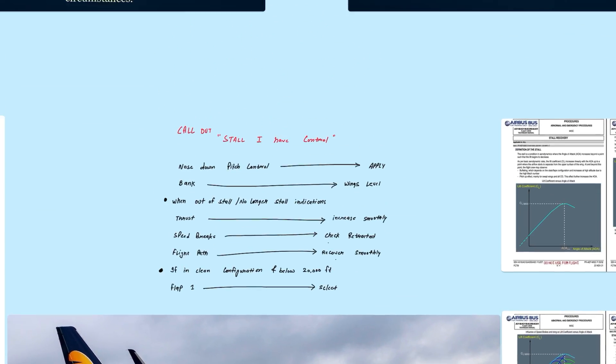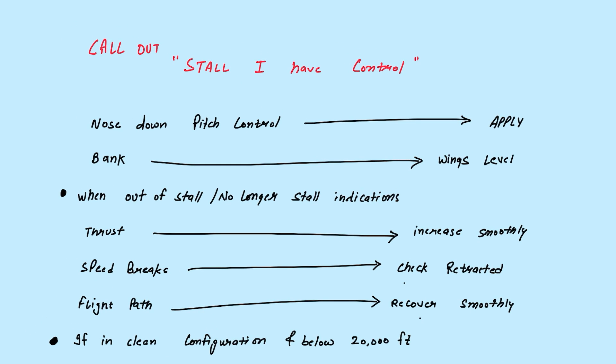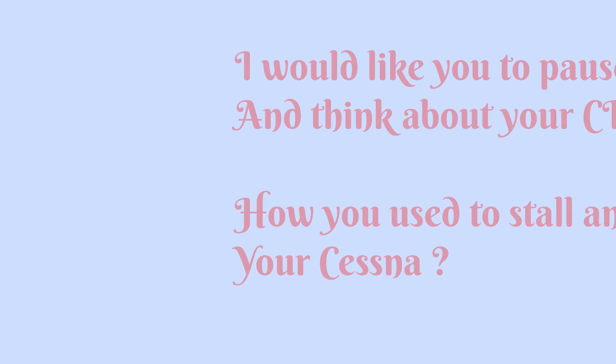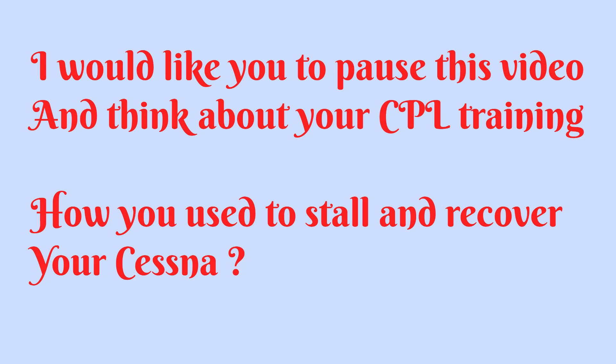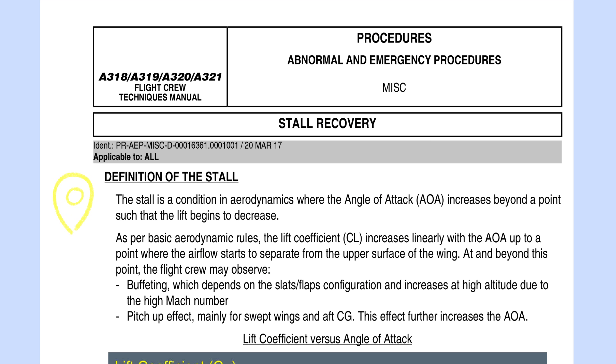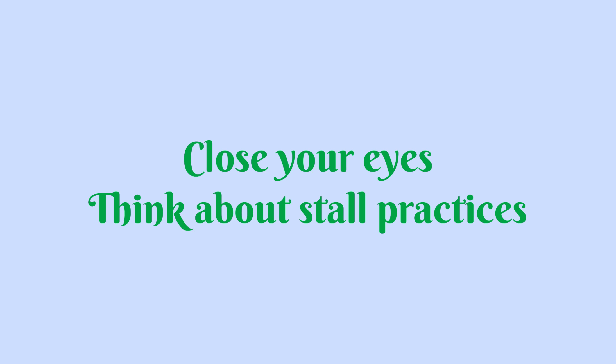Give a call: 'Stall, I have control.' This call is just to notify the pilot monitoring that we are in stall and I have controls. Now, what will you do to come out of this stall? From basic CPL training, whenever you are experiencing stall it means your angle of attack is reaching the angle of attack stall. So you need to reduce your angle of attack — that is the very first thing. Second, you should keep your wings level, otherwise your aircraft will go into a spin, which is even worse than stall.